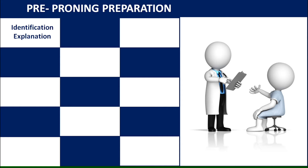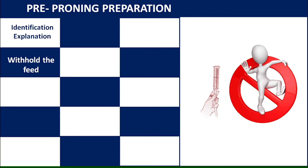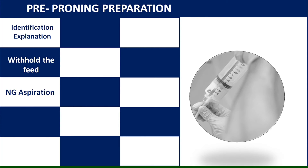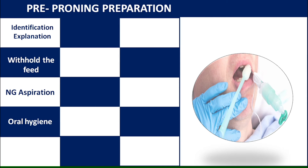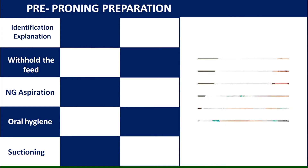Check for an arterial line in the femoral area and a Foley's catheter. Withhold feed to prevent aspiration — feeding should be withheld at least two hours before positioning and nasogastric aspiration should be done before prone positioning. Provide proper oral hygiene, perform oral suctioning, and perform endotracheal suctioning.